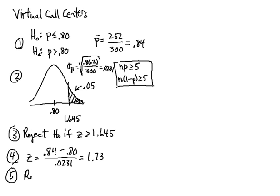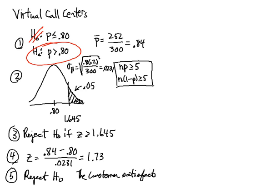So step 5 is reject H0. So in rejecting H0, I've proven the alternative true. So the customer satisfaction is greater than 80%.